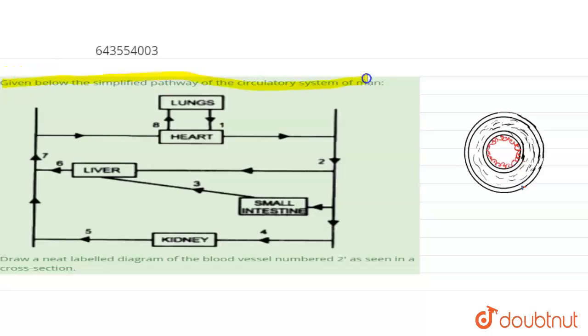Here the question is given below: the simplified pathway of circulatory system of man. Draw a neat labeled diagram of the blood vessels number two as seen in cross section. So it has got a circulatory system of man, then the blood vessels number two.